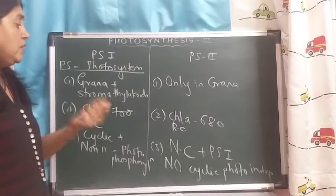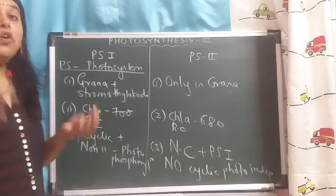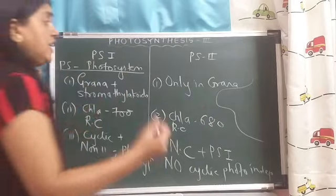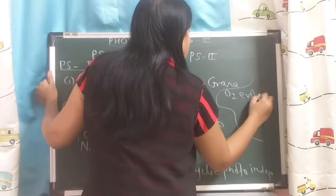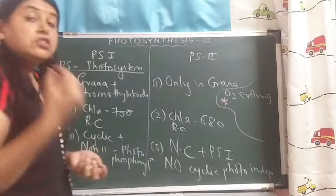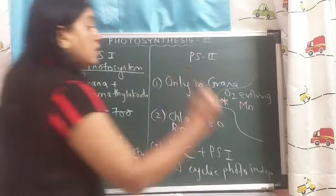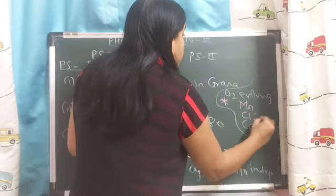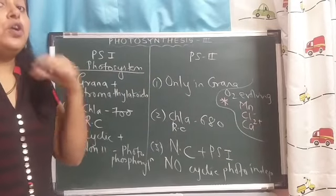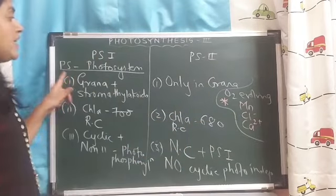A very important point: PS2 is a part of the oxygen evolving complex. The oxygen evolving complex of PS2 consists of manganese (Mn), fluoride ions, as well as calcium ions. So PS2 is going to carry out the photolysis of water, which is not carried out by PS1.